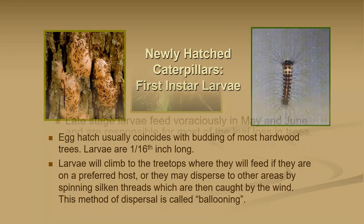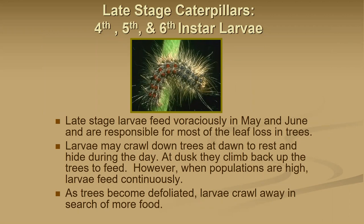Caterpillars go through six stages of development called instars. Later instars show characteristic red and blue raised tubercles on the caterpillar. The hairs can be very irritating — some people have allergic reactions and itching. The behavior of these caterpillars is to crawl down the trees at dawn to rest and hide during the day, then climb back up into the canopy to feed in the evening. When trees become defoliated, they will crawl down and move to find another tree.